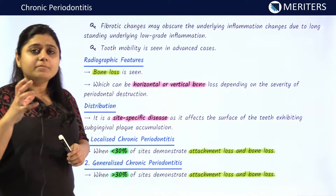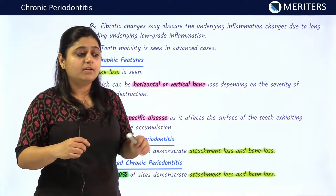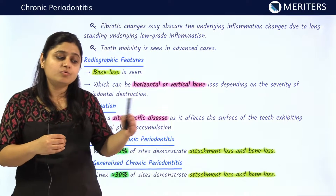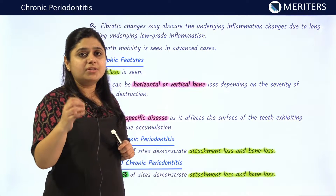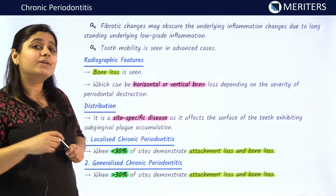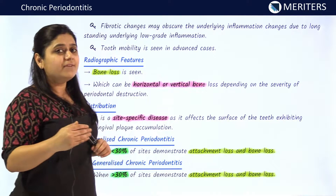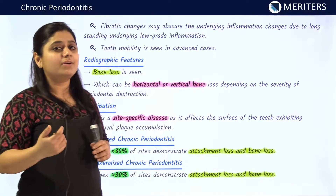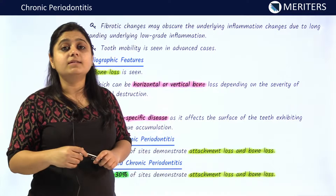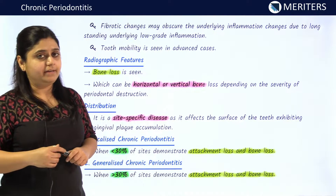Sometimes in gingival inflammation, there might be fibrotic changes seen. The fibrous gingiva does not allow one to view the low-grade inflammation that might be present. The fibrotic changes obscure the low-grade inflammation present in the gingiva, making it very difficult to determine whether gingivitis or periodontitis is present. Also, in severe cases, tooth mobility is seen in cases of periodontitis.